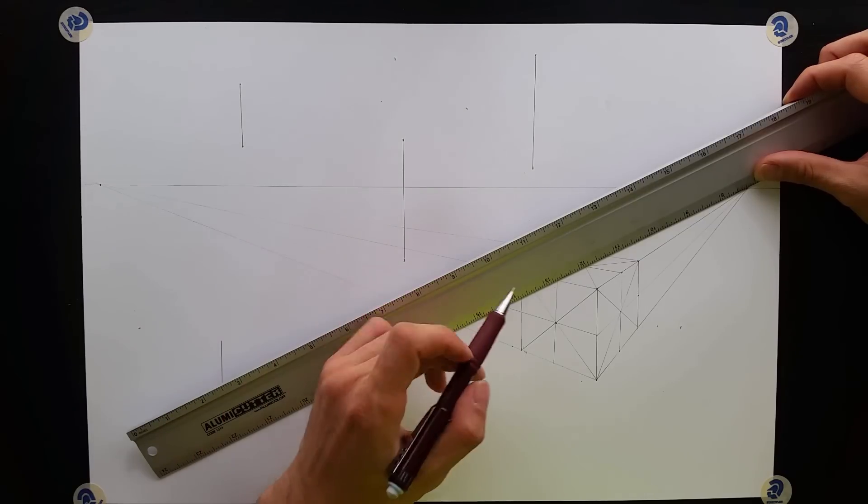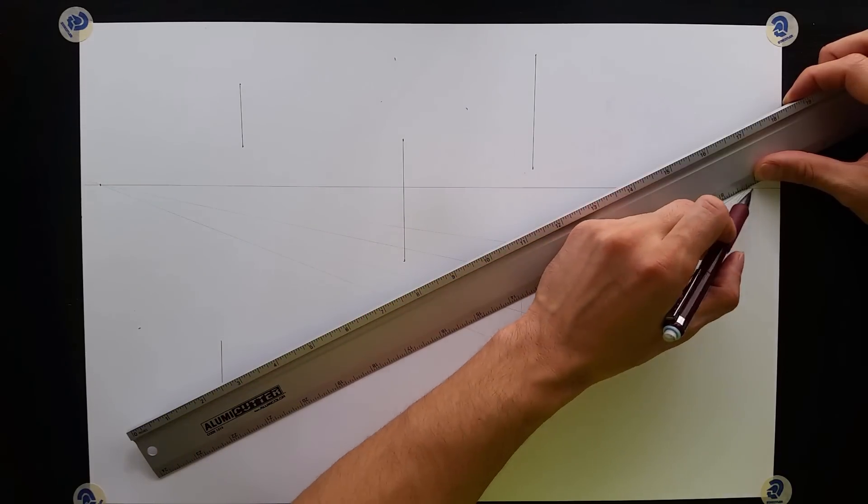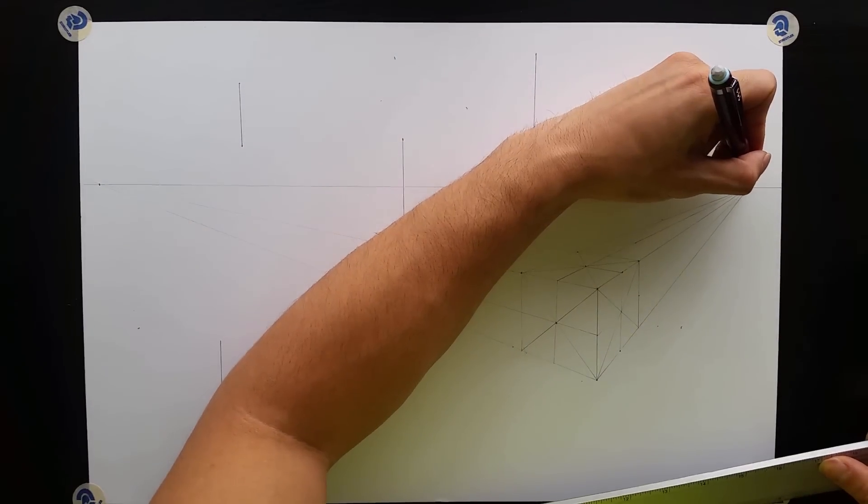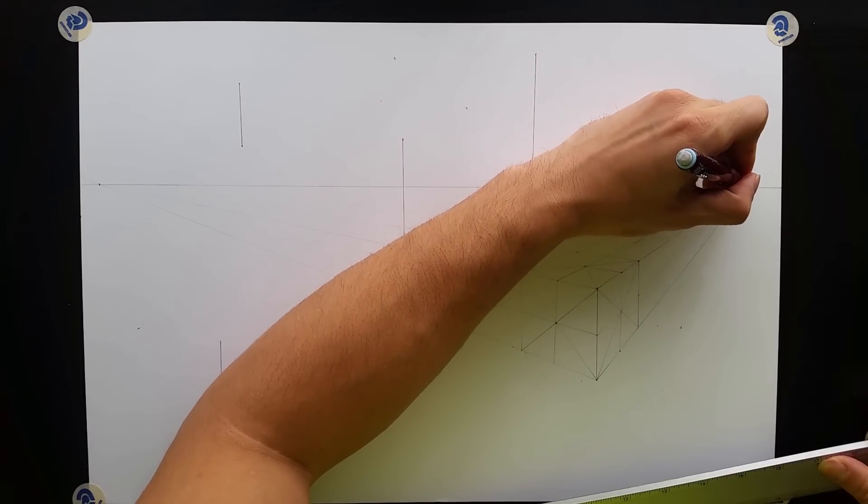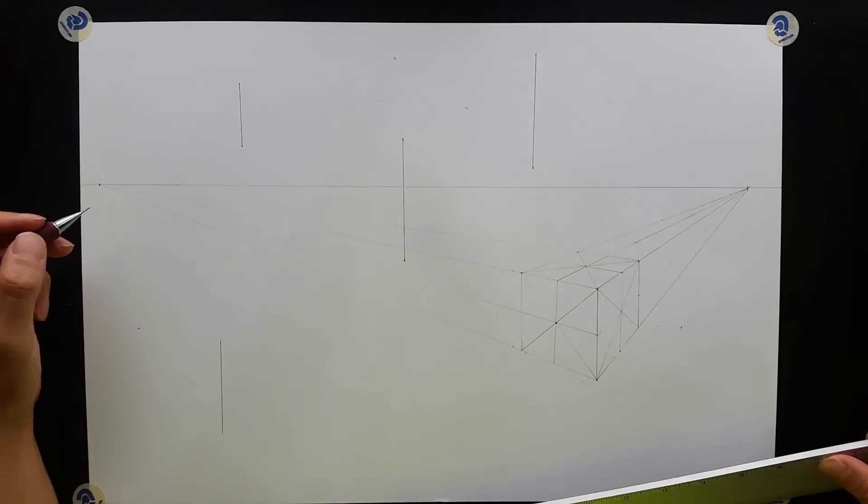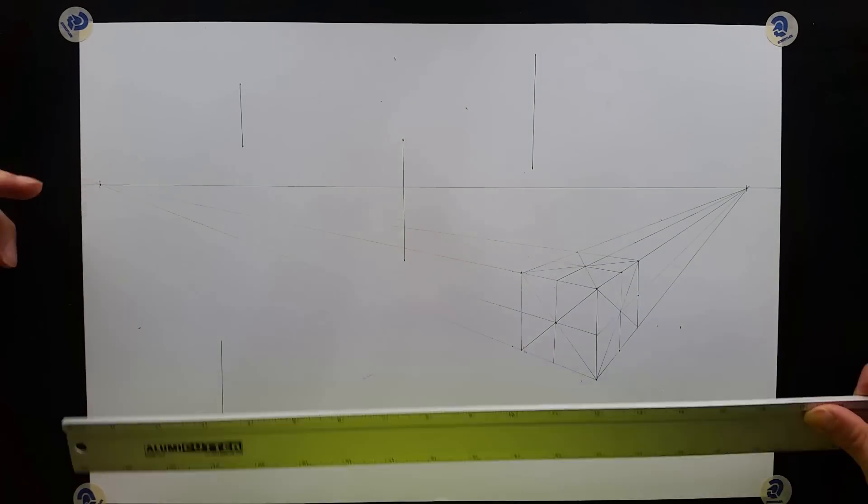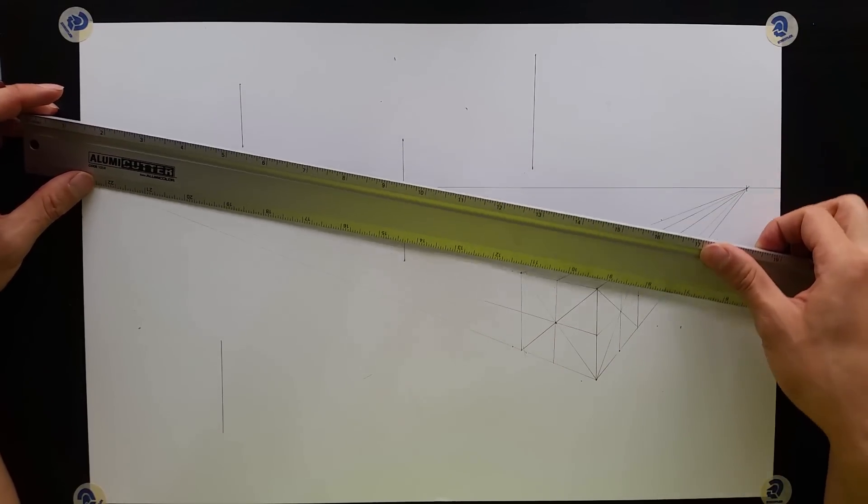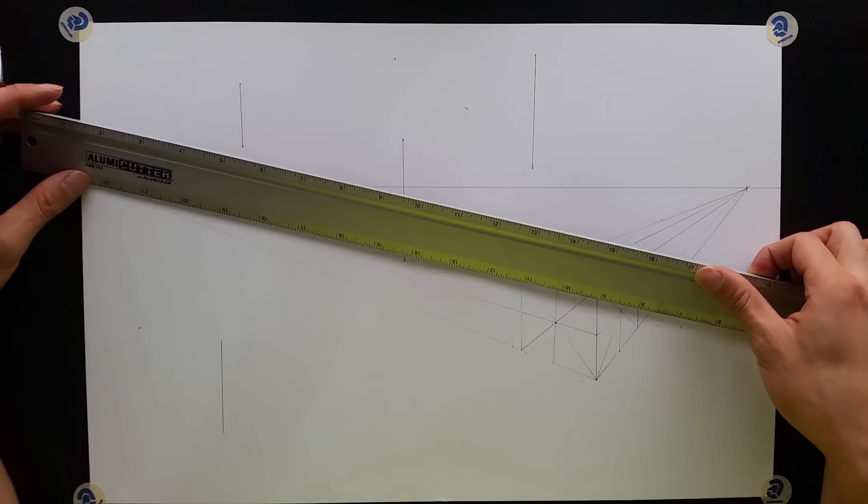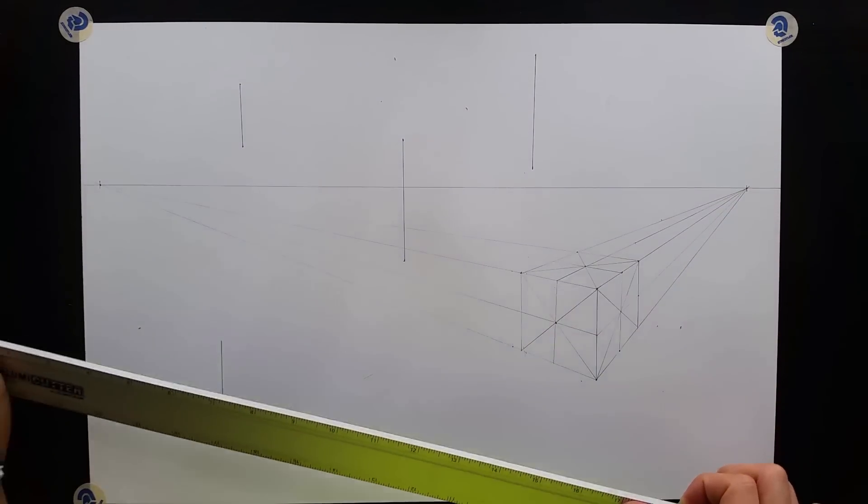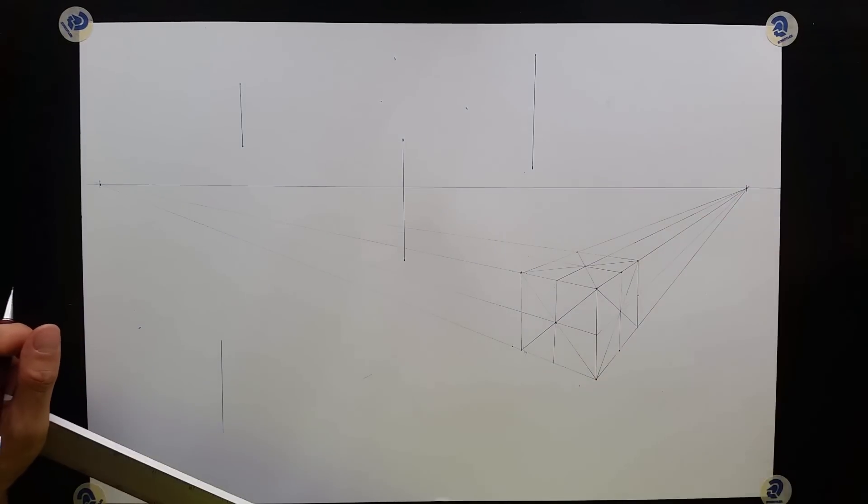Another thing we used to do in school was to grab this point here and push a push pin through it. And that way, when you're lining up your ruler, you actually have a physical pivot to use over and over. But I don't want to ruin my desk, so I'm not going to do that.